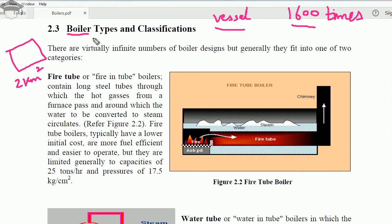Now the classification, the broad classification is according to two types: that is fire tube boiler and water tube boiler.